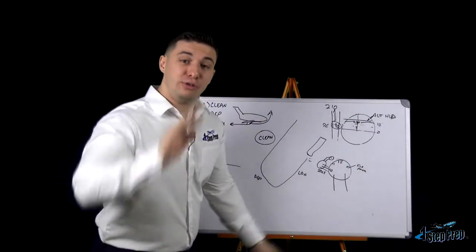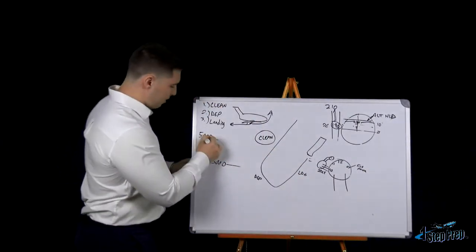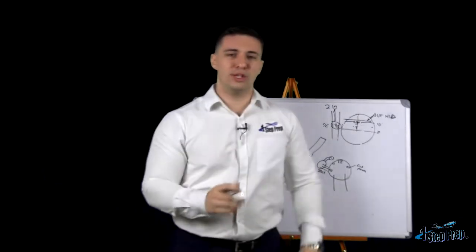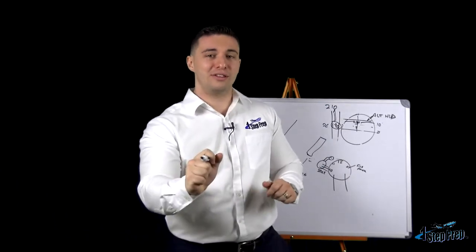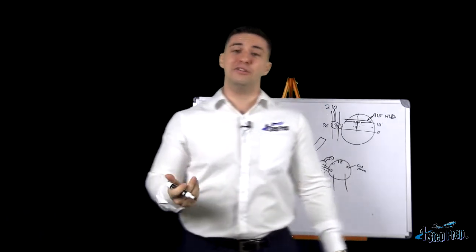We can trade altitude for speed on the way down, or we can do a little combination of trading some altitude while also coming in with some thrust, because thrust, of course, is another way to bring your indicated airspeed up.